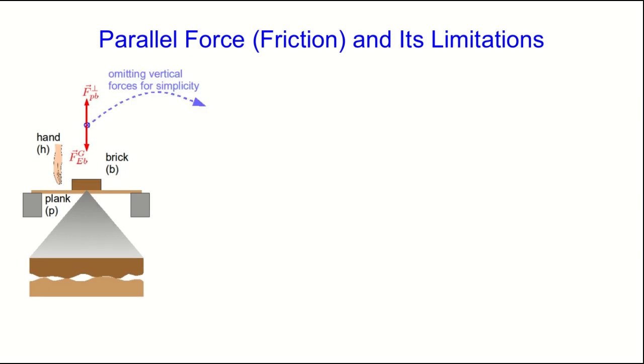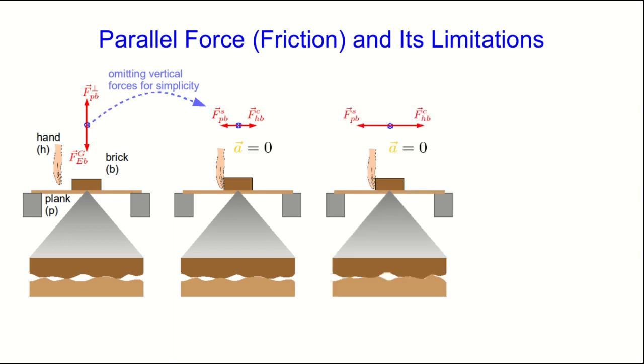And now as I go forward, I'm going to omit the vertical forces for simplicity and clarity. So we can just focus on the forces that your hand is exerting horizontally, and that the plank will exert back horizontally on the brick. So first, when you start to push a little bit, there is a horizontal static friction force that exactly balances the force that your hand is exerting. And if you press a little harder, that static friction increases to compensate.